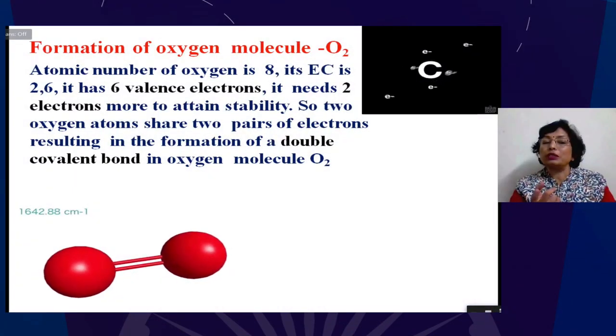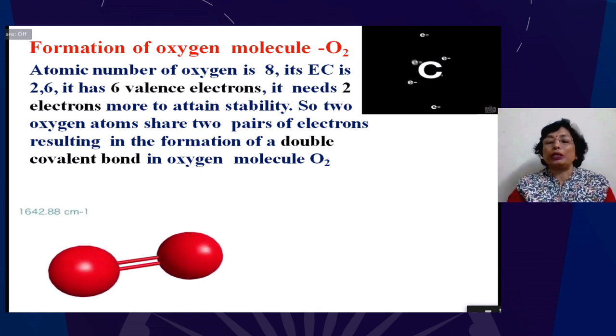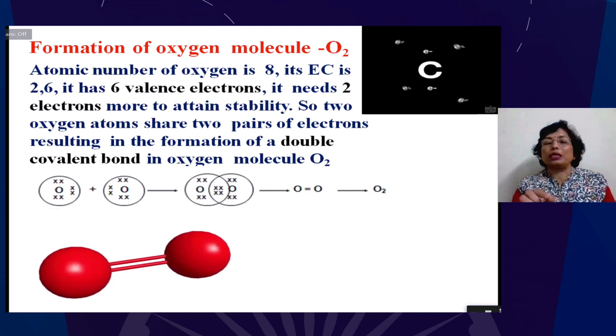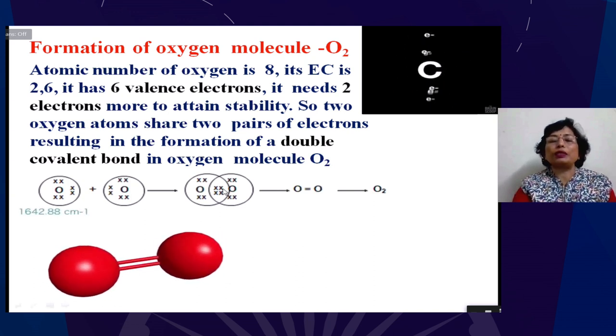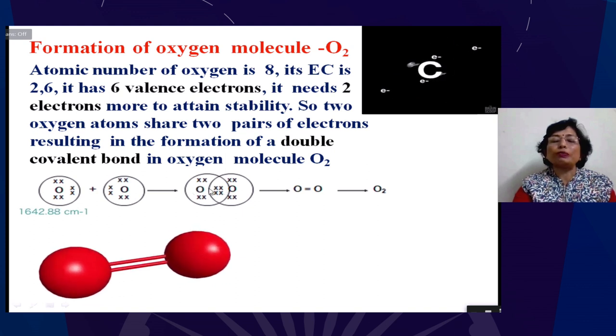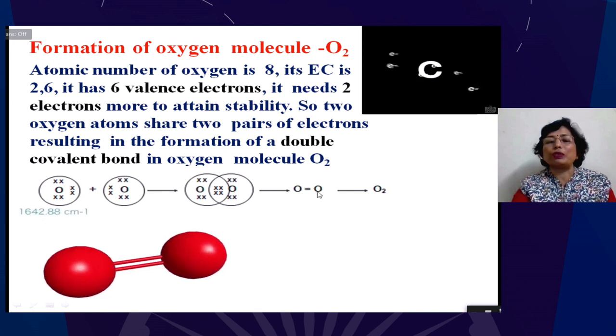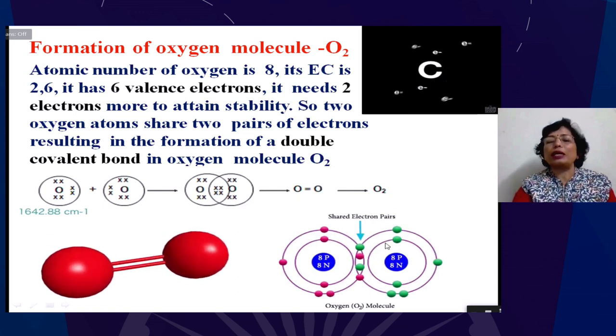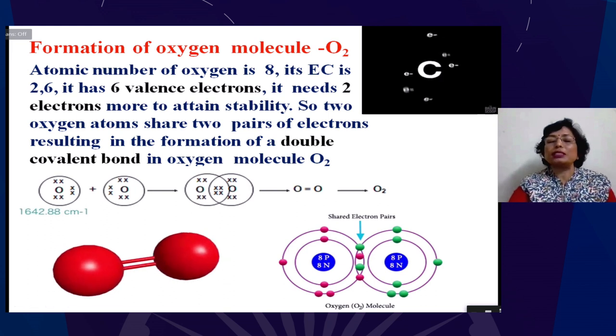Now, if you see the structure of oxygen, atomic number of oxygen is 8, its electronic configuration is 2,6. It has 6 valence electrons. How many more electrons it requires? It requires two electrons more to attain stability. So two oxygen atoms share two pairs of electrons resulting in the formation of a double covalent bond in oxygen molecule O2. If you see the Venn diagram in the middle, it has 4 electrons - two from one oxygen atom and two from other, which forms a double bond. This is how sharing takes place. The color of balls are different - one has green, other has pink - to show this is a double bond. So we write it as O double bond O.